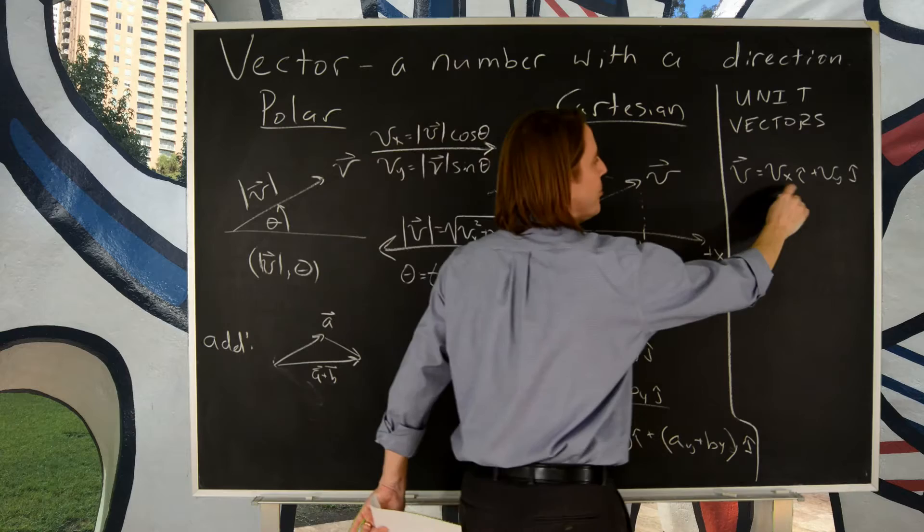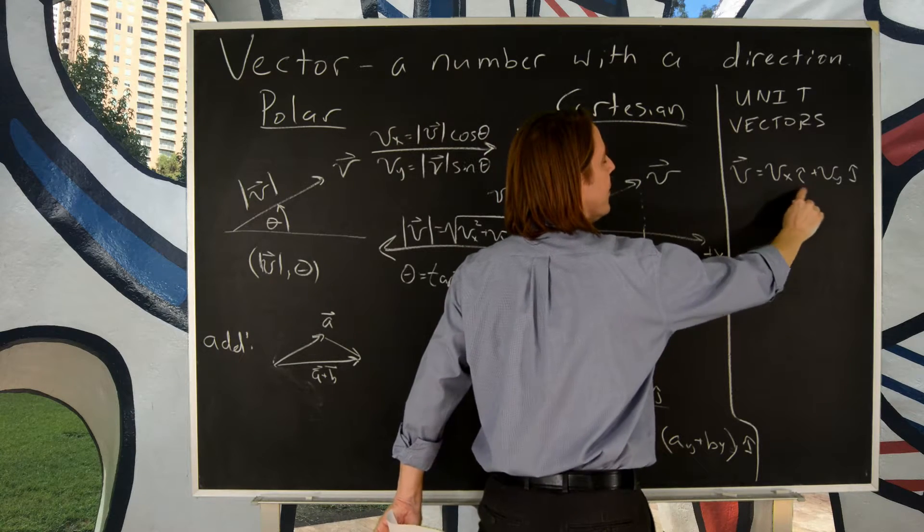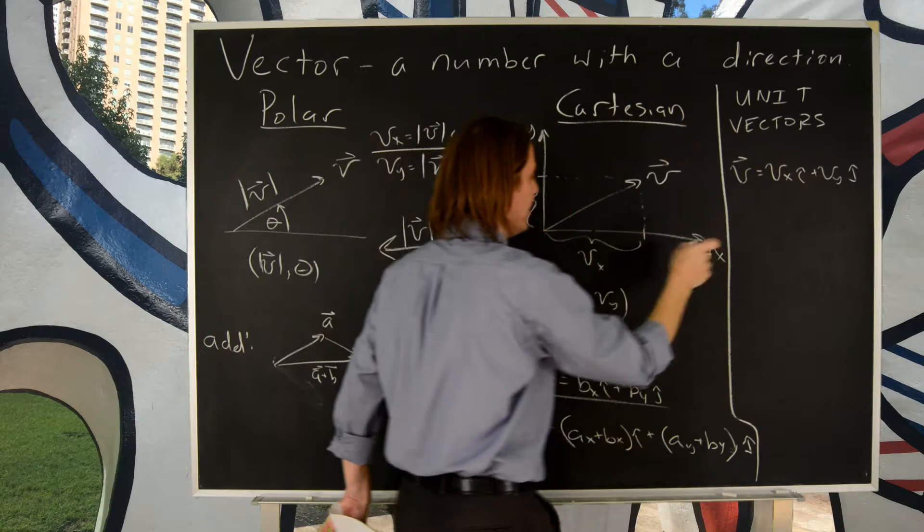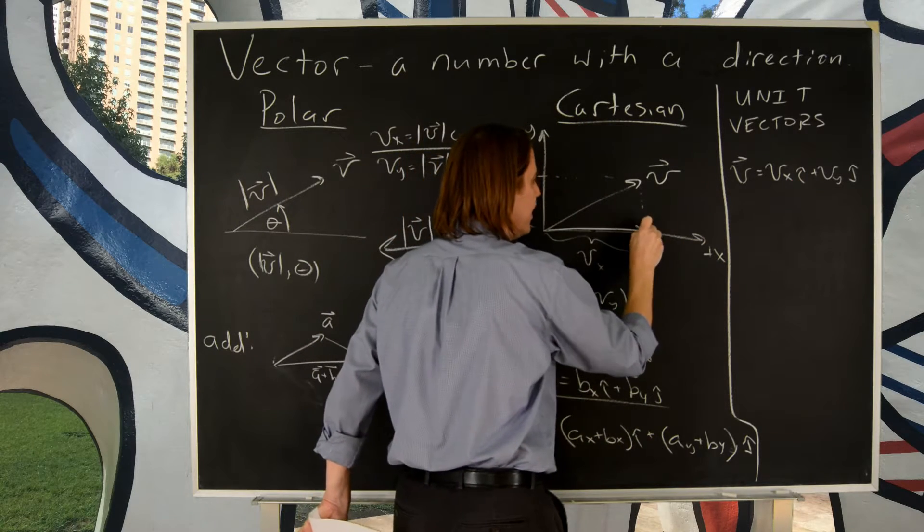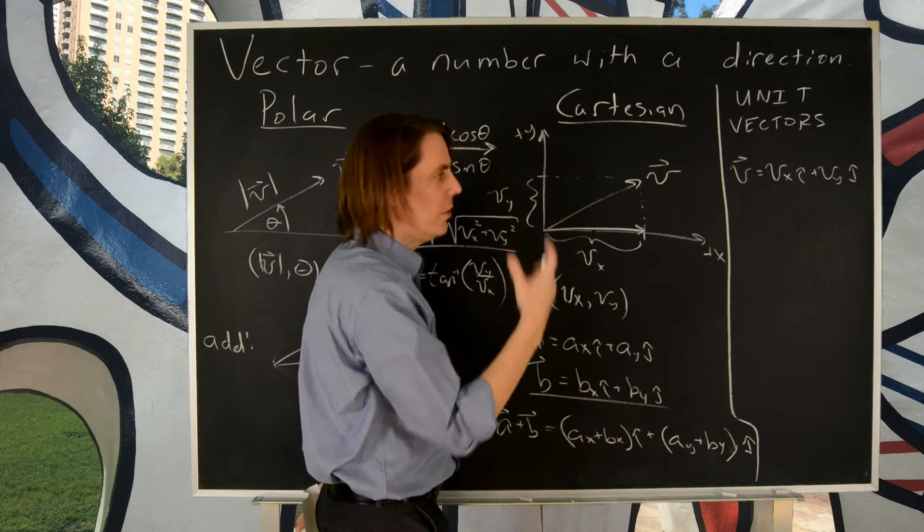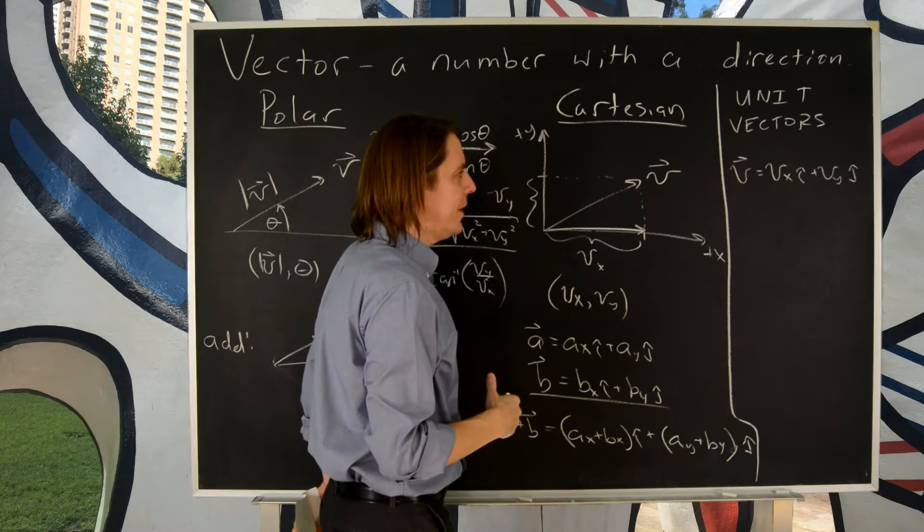So that's why we have this notation that the total vector V is the X component times i hat plus Y component times j hat. And those are literally vectors whose magnitude is 1, but have the direction of the axis. That way, when you multiply them, it has no effect on the length of the vector in that direction. Right? So VX i hat is a vector. This is VX i hat. The unit vector gives it the direction along the X, but it doesn't affect the size. That's what's called a unit vector.